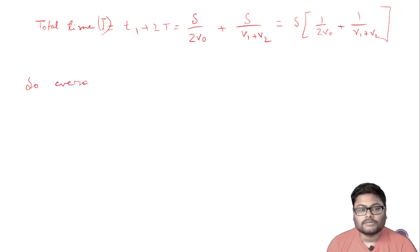So average velocity equals total distance by total time, which is S divided by [S/(2v0) + S/(v1 + v2)].